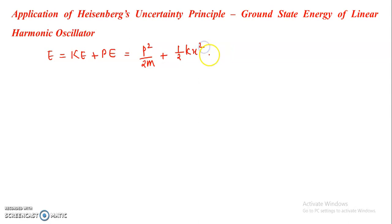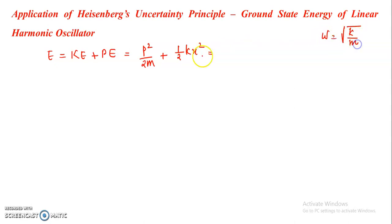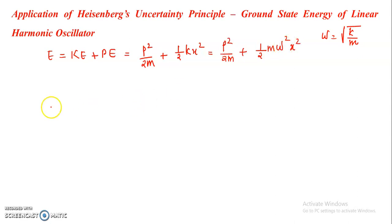Where k is given in terms of angular velocity as ω = √(k/m). So the total energy is equal to p² / 2m plus half mω²x².